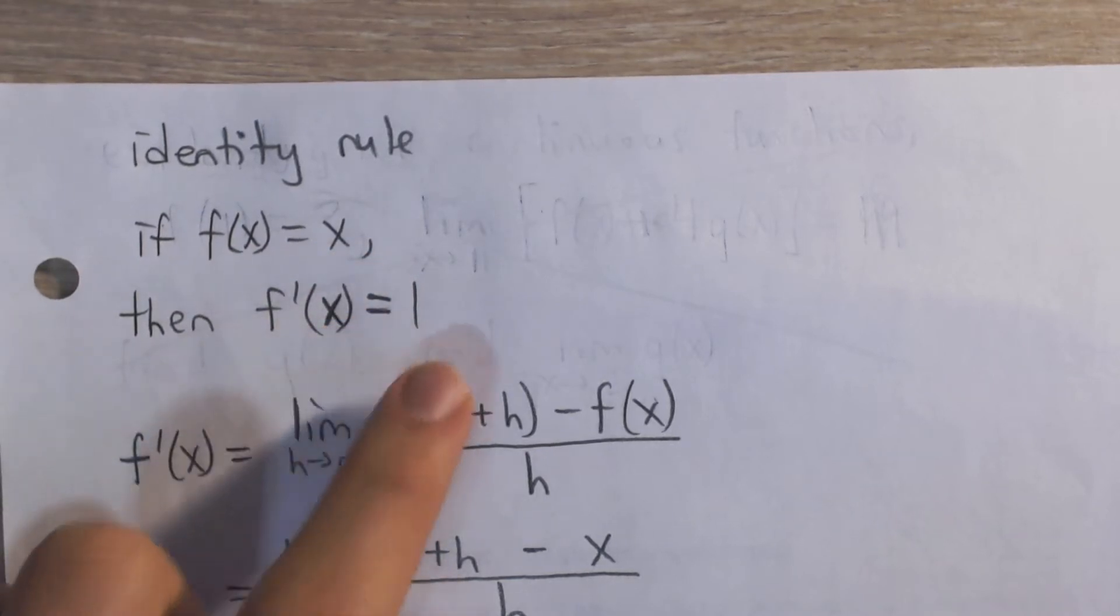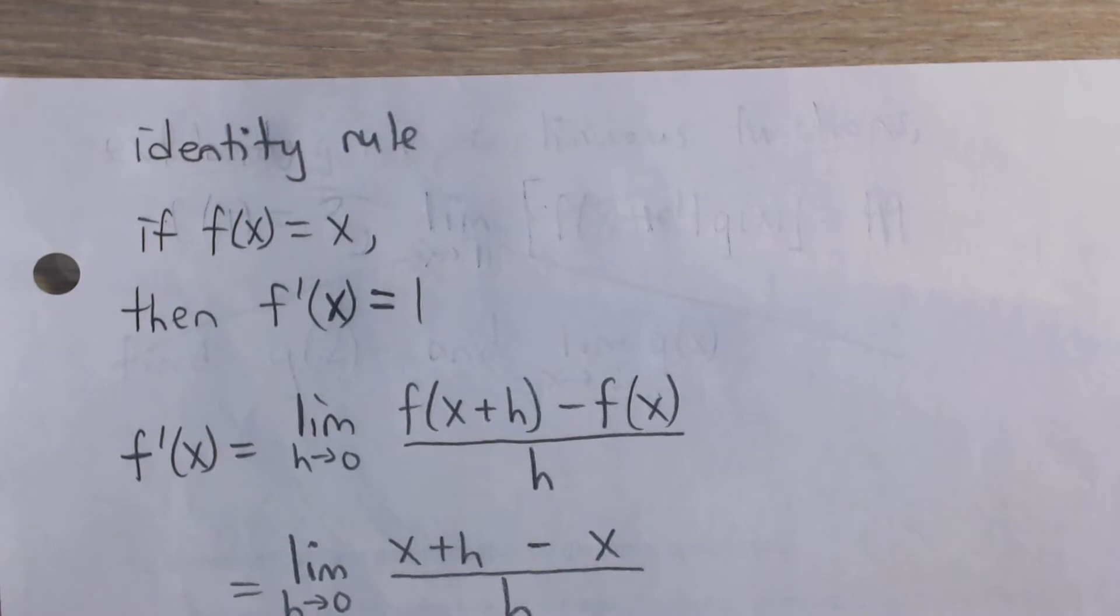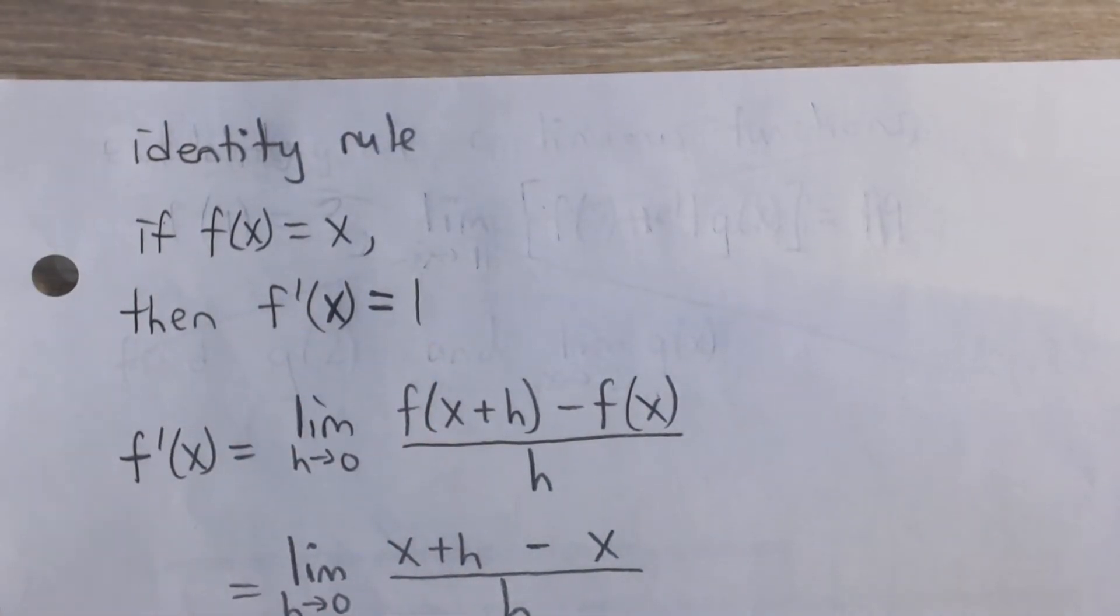then the derivative of this function is 1. And this makes sense probably intuitively, because the line y equals x, or f of x equals x, has slope of 1, and we know the derivative is slope, so the derivative makes sense to be 1.